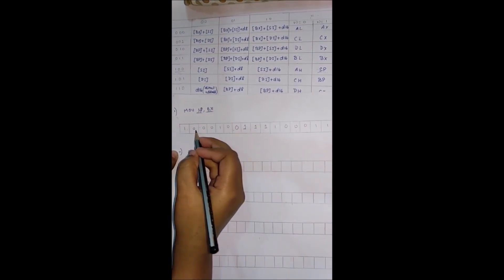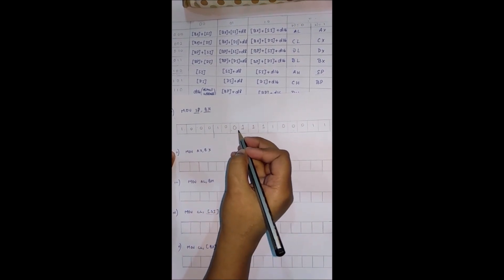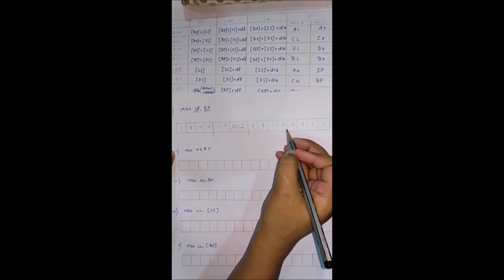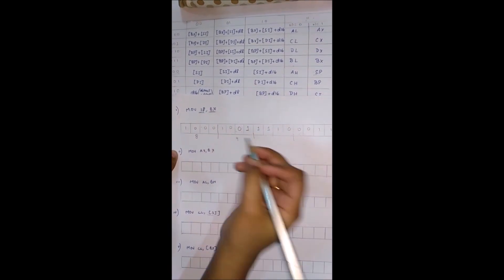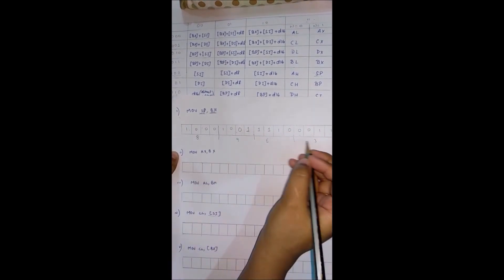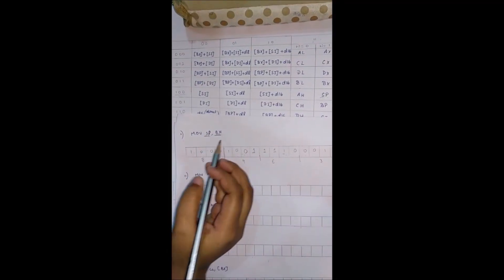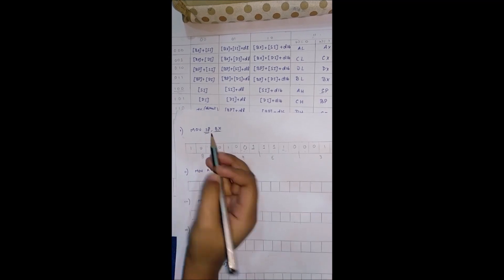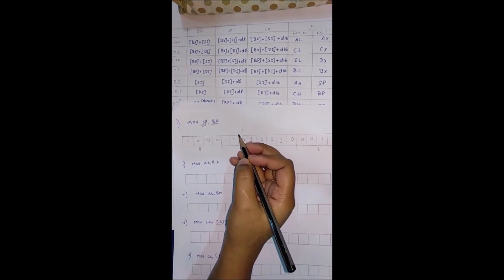Now divide into groups of 4 bits: 1000, 1001, 1110, 0011, giving hexadecimal 8, 9, E, 3. So the answer is 89E3. Note that here I have taken direction as 0 (one register interpretation), but you can also take it as 1, and the answer will be slightly different — you can calculate that on your own.